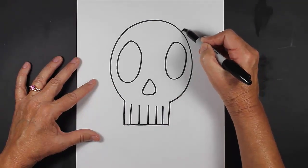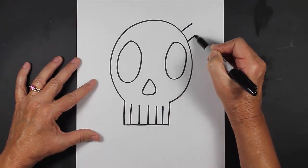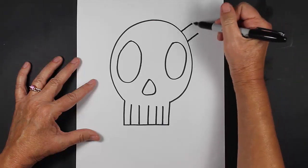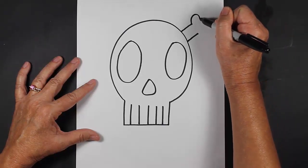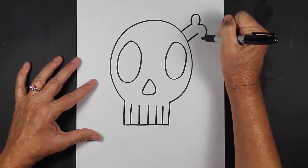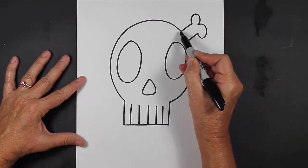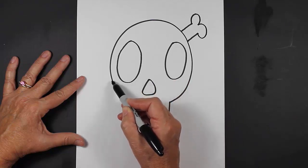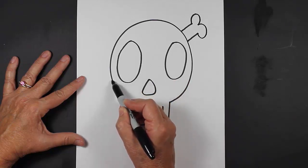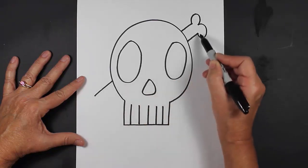And then we are going to add the number three. Now this is important, so we're going to follow this line down, but we're not going to go through our skull. We're going to go behind our skull and then make two lines coming out this way just like that. And then we're going to make a backwards number three.